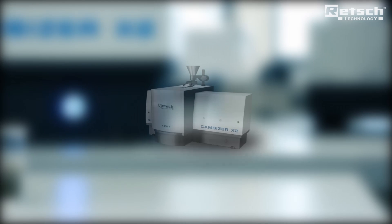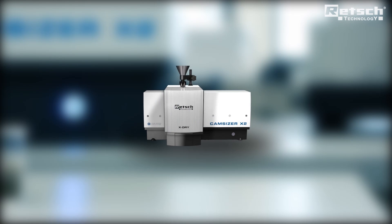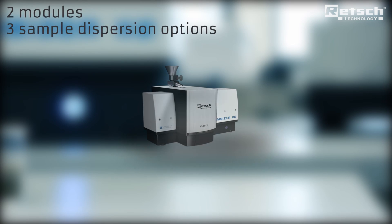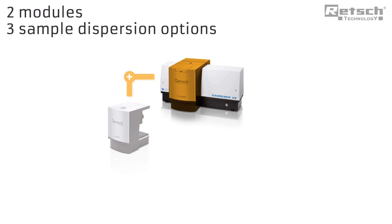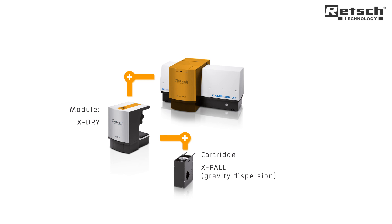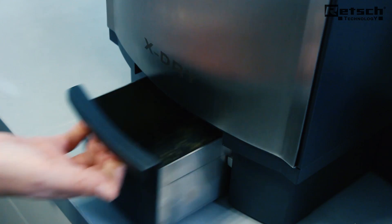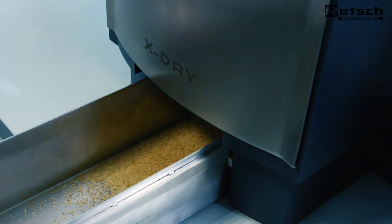The CamSizer X2 is suitable for measuring dry and wet samples. It features two modules with three different sample dispersion options. The dry dispersion module X-Dry can be equipped with two different cartridges. The gravity dispersion cartridge X-Fall is used for pourable solids and free-flowing bulk materials. The whole sample can be recovered after the measurement.